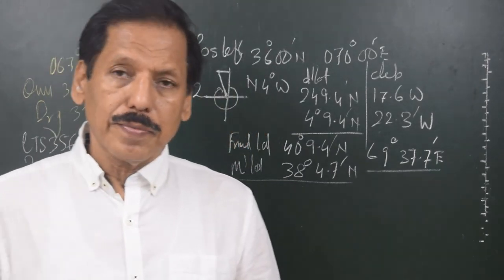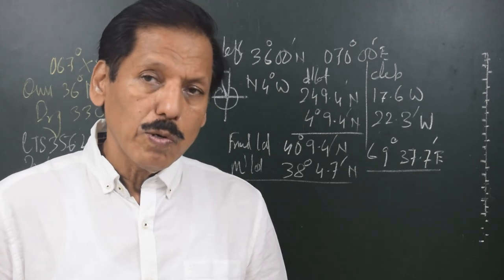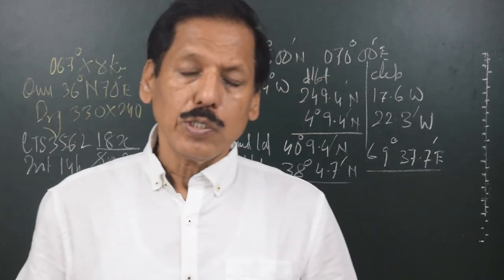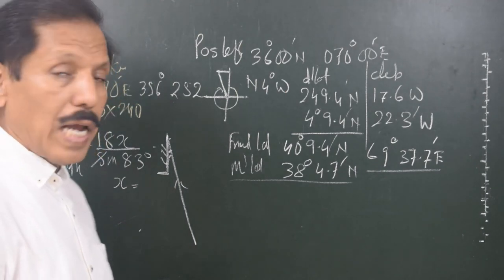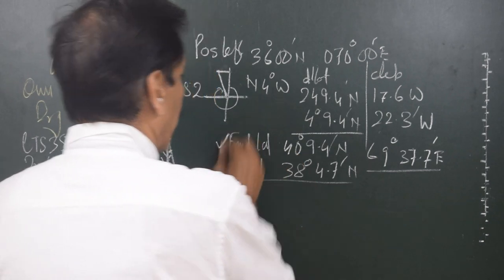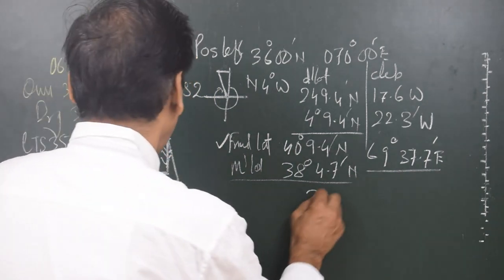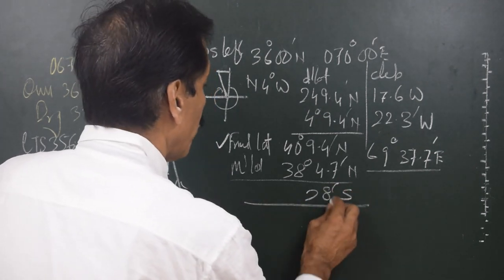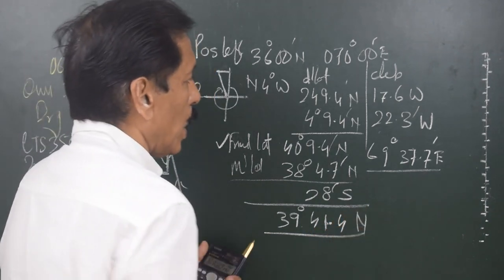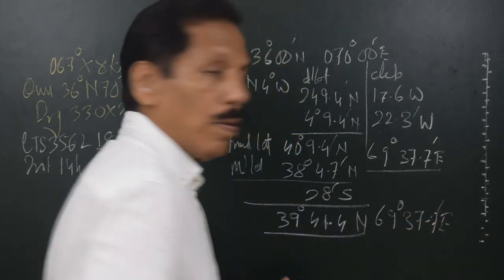We did face a current. I don't need to account for the target's current — I know what course I steered for 14 hours at 18 knots, so I know my distance over water. However, there was an average current applicable to me: southerly two knots. So my latitude arrived needs a DLAT of 28 minutes south applied. The position therefore becomes 39°41.4'N, 069°37.7'E as the final position.